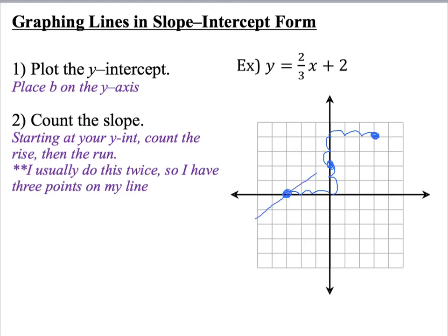So I can graph that and then make sure I put arrowheads on my ends. And then that is the line y equals 2 thirds x plus 2. Most times I do 3 points on my line so that way I have a very clear picture of what my line is going to look like.